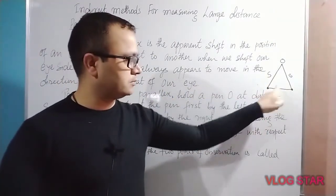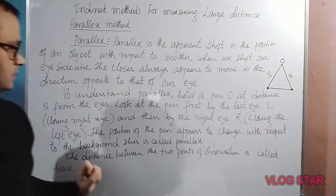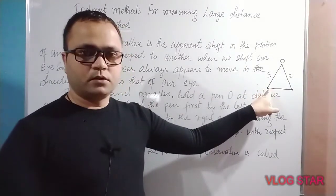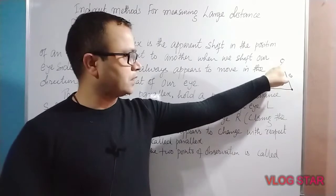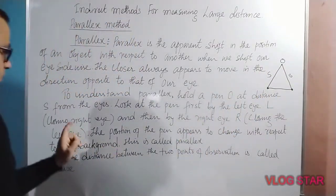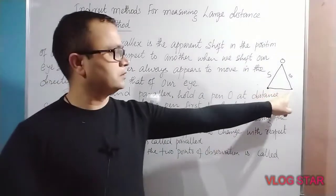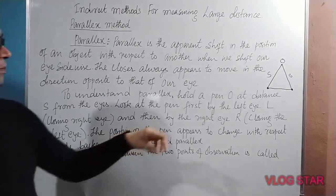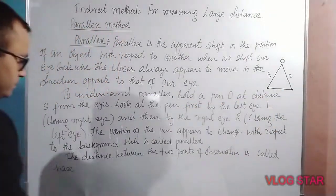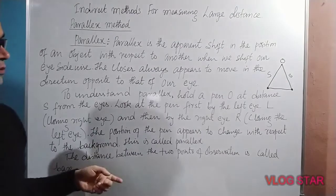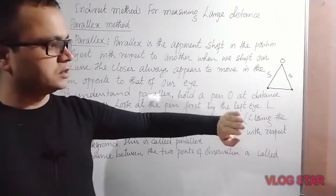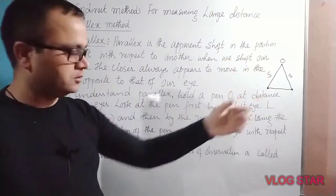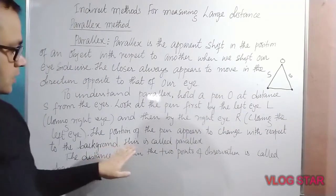These are the positions of the eyes. Look at the pen first by the left eye by closing the right eye, and then by the right eye by closing the left eye. The position of the pen appears to change with respect to the background — a wall, a tree, a road, a building. This phenomenon is called parallax.